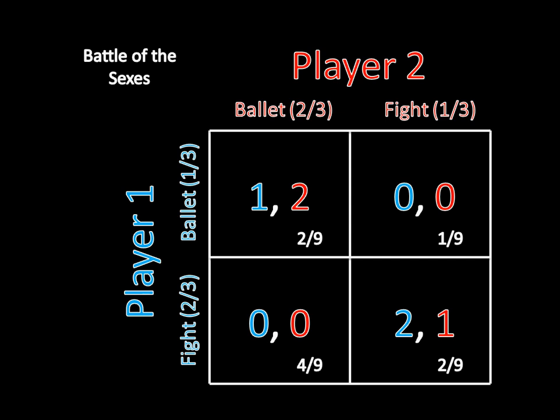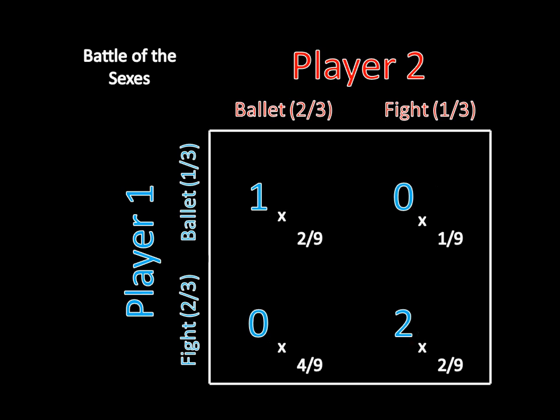Now we need to pick a player to calculate the mixed strategy payoff for — let's do it for player one. What we want to do is multiply: one times two-ninths, zero times one-ninth, zero times four-ninths, and two times two-ninths. The theory behind this is that each of these probabilities is the probability that you actually end up at that outcome given you're playing the mixed strategy Nash Equilibrium. The probability that both end up at the ballet is one-third times two-thirds, which is two-ninths.